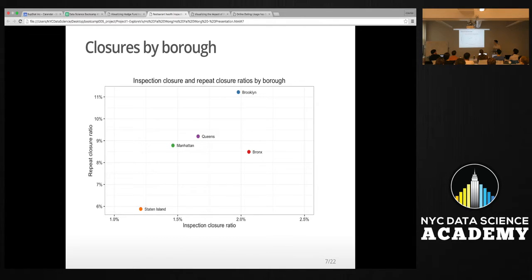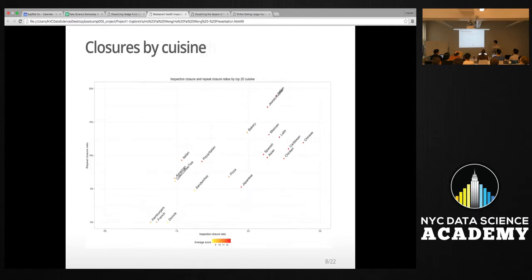Anyway, so looking at the closure ratio, I start to see some differentiation between the boroughs. So I figured, alright, let's look at the other dimension of this—the cuisine.